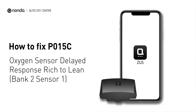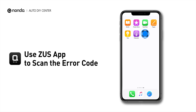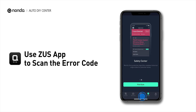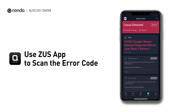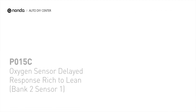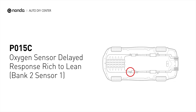If you are getting a P015C error code, this video is going to show you two practical solutions to fix the error code at home. Use the Zeus app to scan your vehicle and see the error code P015C. It means that the powertrain control module has detected a delayed response time from the upstream oxygen sensor or circuit for engine bank 2.